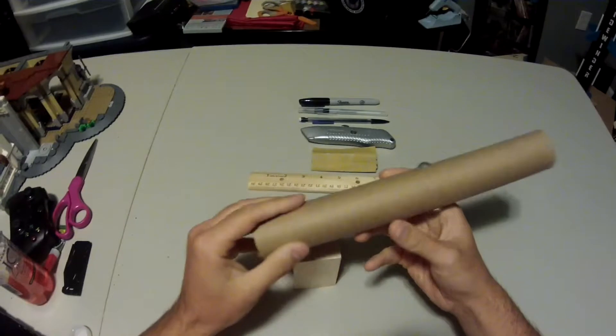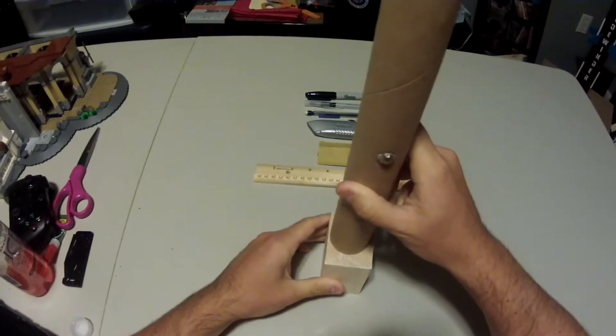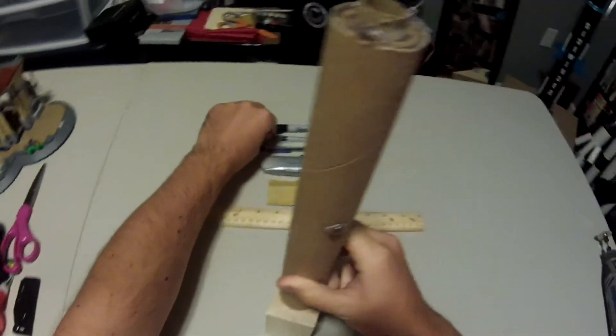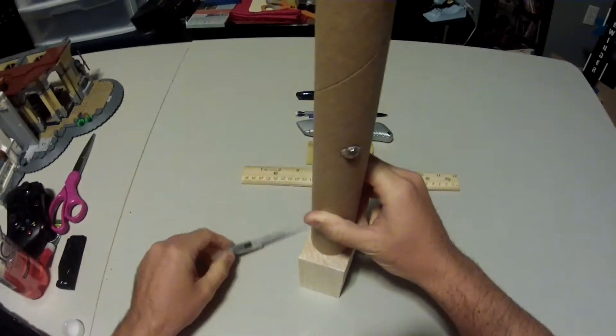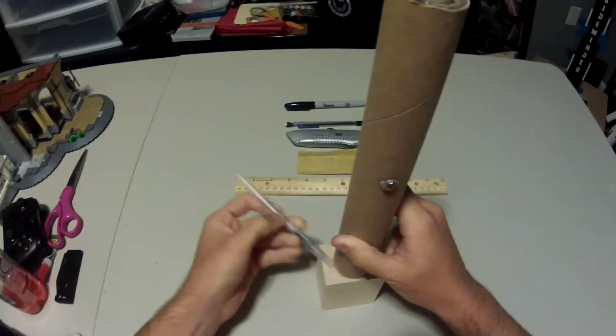Once you have your balsa wood block ready to go, we're going to have to turn it into a cylinder. To do that, we're going to trace the end of our rocket tube onto each end of our balsa wood block, kind of like how we did for our engine mount and our piston.